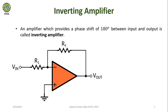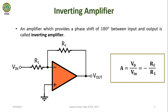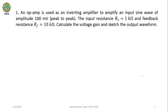The gain of an inverting amplifier is given by A = V0 / Vin, which equals minus Rf divided by R1, where Rf represents the feedback resistance and R1 represents the input resistance. Now let us solve the problems related to this equation.